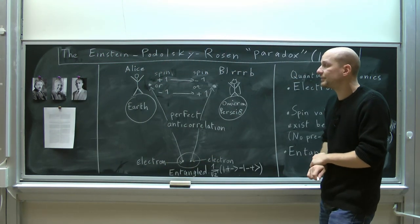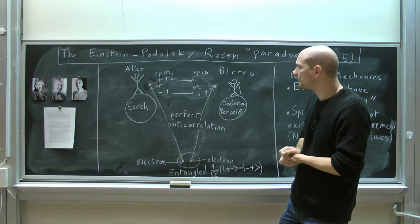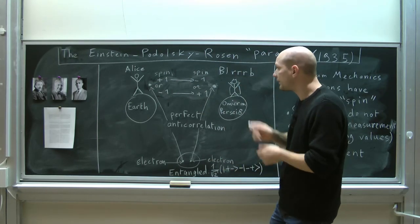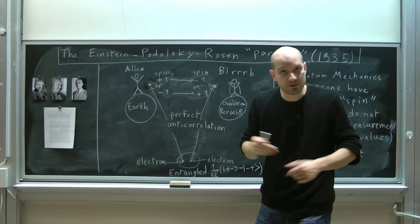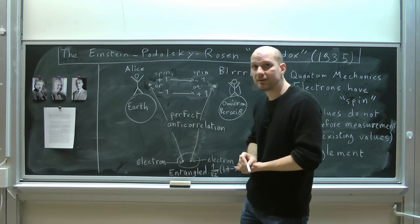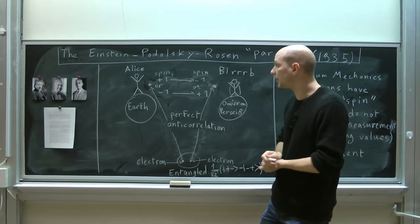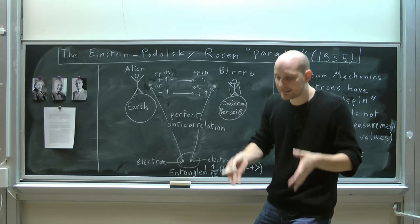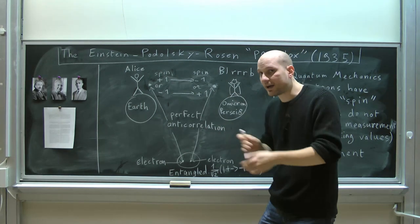This is what quantum mechanics predicts. However, when I present things this way, there seems like there's something non-local going on. From the point of view of Blurb's electron, before Alice measures the spin of her electron, Blurb's electron is in a state in which a spin measurement will either give minus one or plus one — both are a possibility. But immediately after Alice has measured her spin — say she measured plus one — Blurb's electron immediately changes into a state in which the measurement of the spin will necessarily yield minus one.